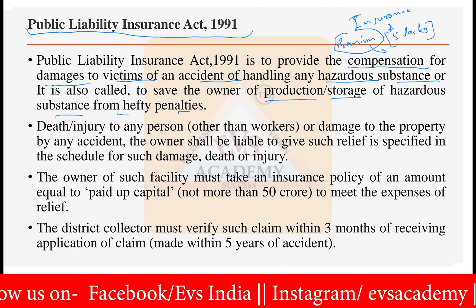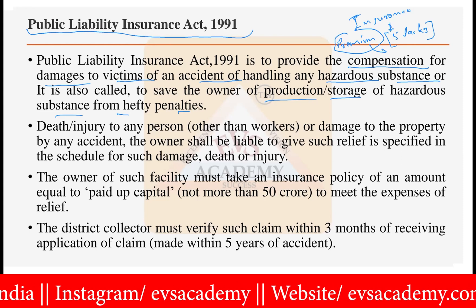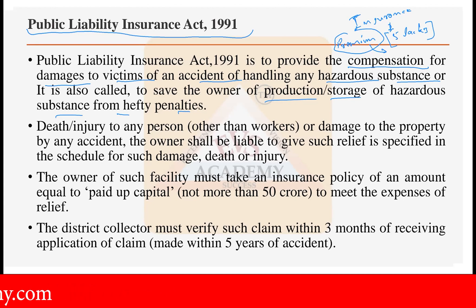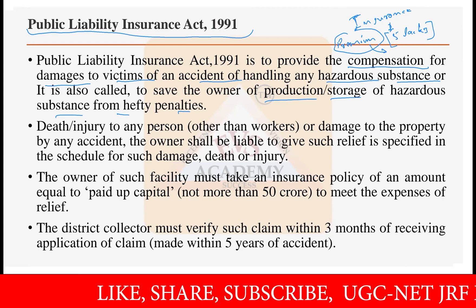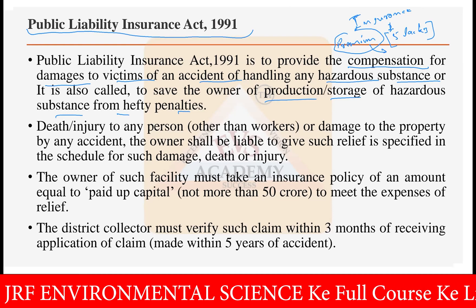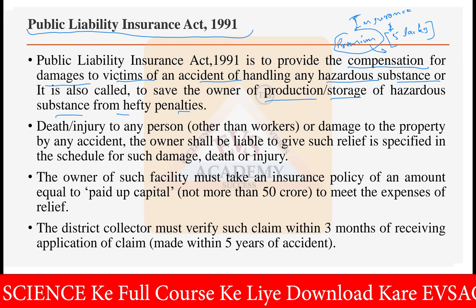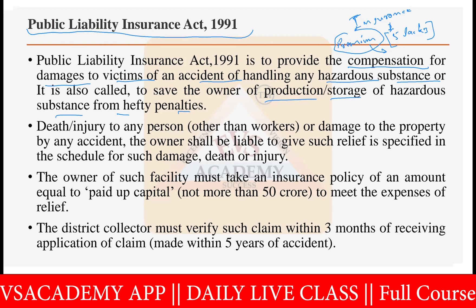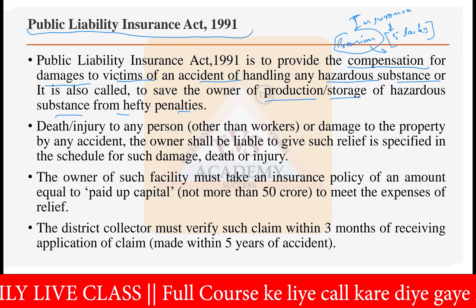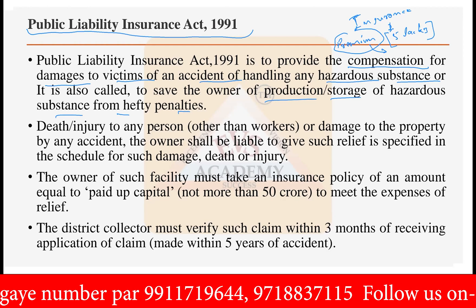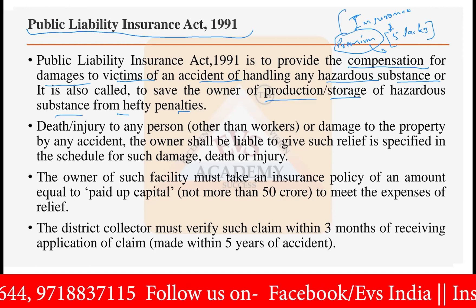Similarly, under the Public Liability Insurance Act of 1991, companies or factories pay a premium — maybe a few lakhs or crores of rupees depending on company size — to the insurance company. If nothing happens in the next year, that premium is the insurance company's profit. If any accident occurs and public or public property is damaged, all compensation is paid by the insurance company, not by the industry.